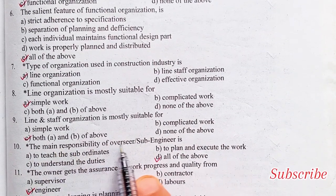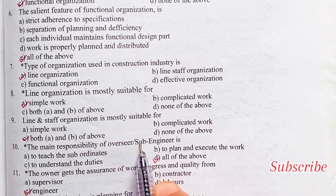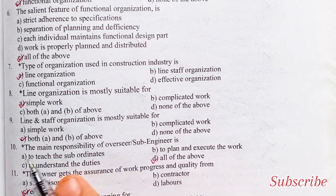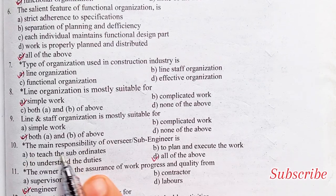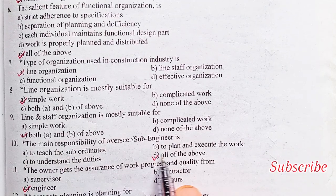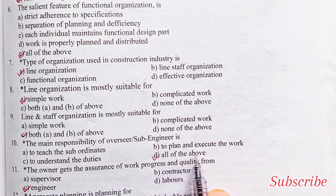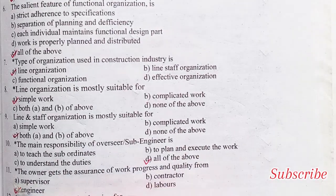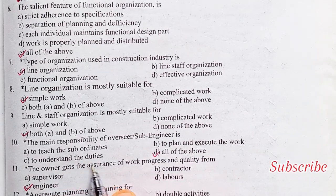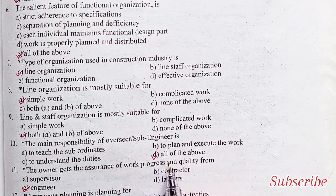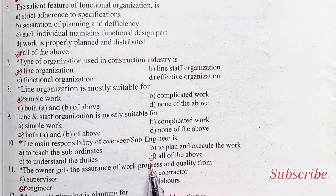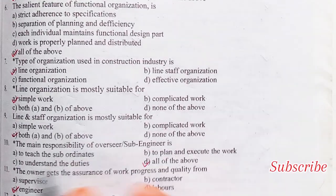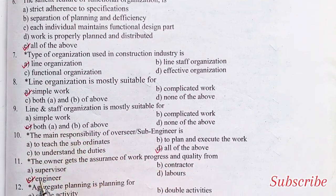The main responsibility of an overseer or shop engineer is: to teach the subordinates, to plan and execute the work, to understand the duties, all of the above. Option D is the right answer — all of the above.